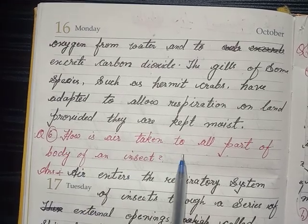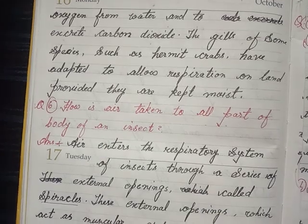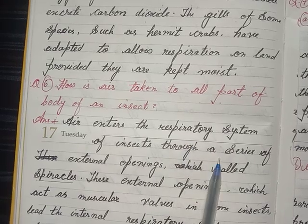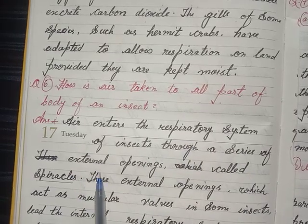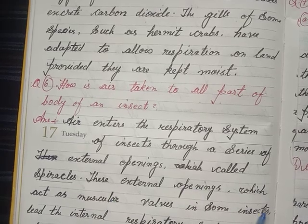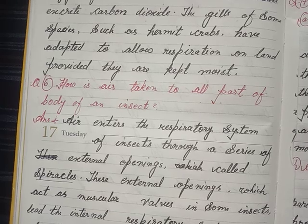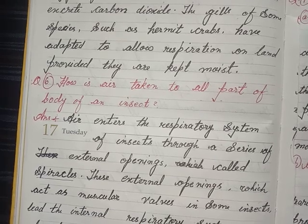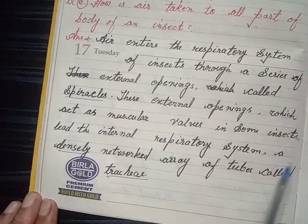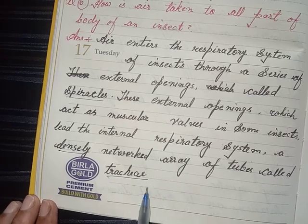Question 2 — How is air taken to all parts of the body of an insect? Answer: Air enters the respiratory system of insects through a series of external openings called spiracles. These external openings, which act as muscular valves in some insects, lead to an internal respiratory system — a densely networked array of tubes called trachea.